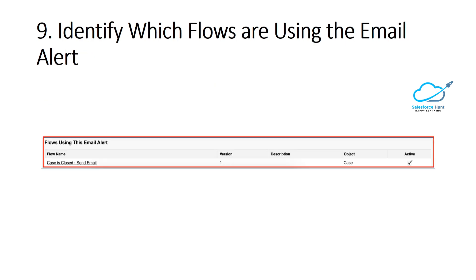The next new feature lets you identify which flows are using an email alert. This is a handy and useful feature — you can now easily recognize and identify which flows are using a particular email alert.